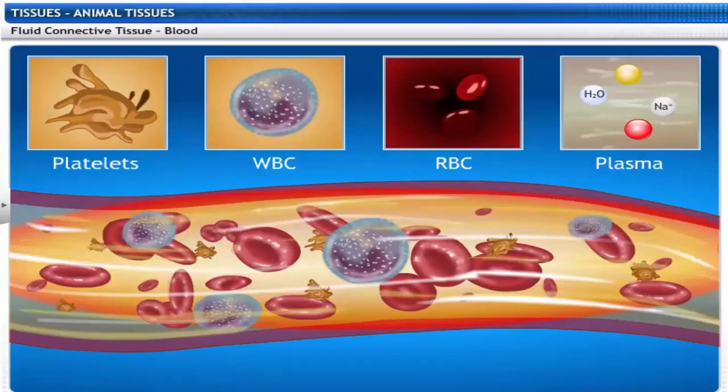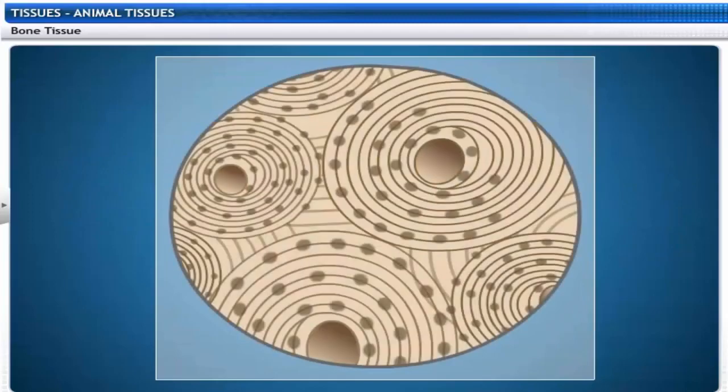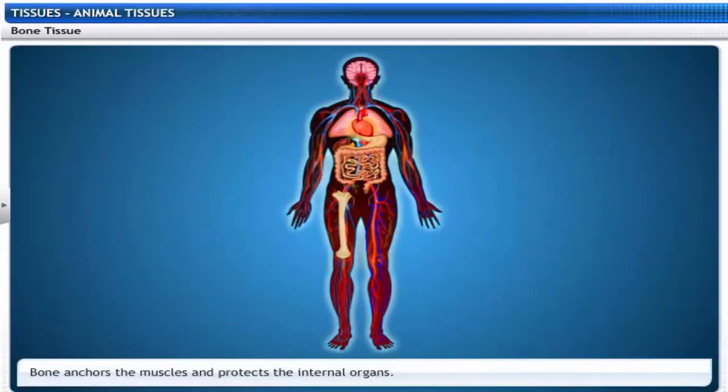Blood flows within blood vessels and transports gases, digested food, and hormones to different parts of the body. Bone is another connective tissue. Bone cells are embedded in a hard matrix composed of calcium and phosphorus compounds. It is a hard porous tissue that anchors the muscles and protects the internal organs.